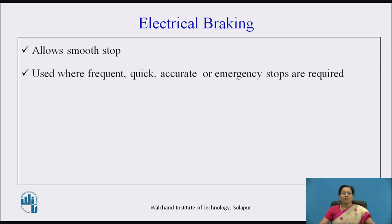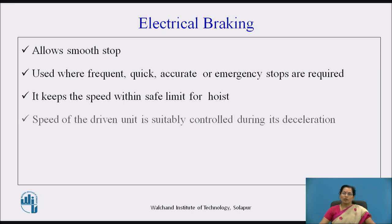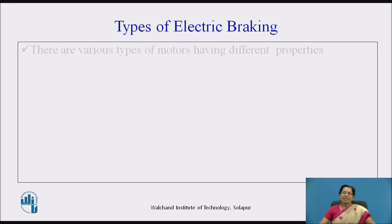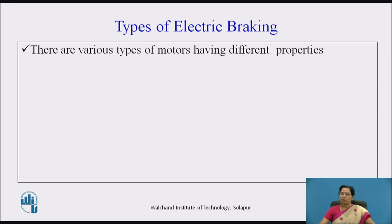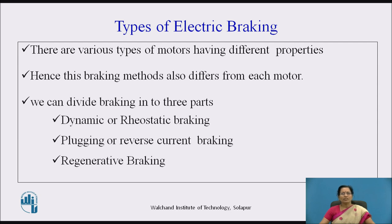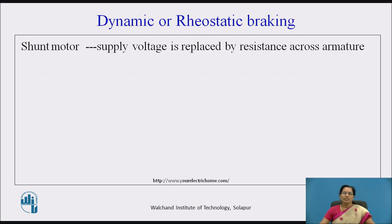Electrical braking is used where frequent, quick, accurate, and emergency stops are required. It keeps the speed within a safe limit for a hoist. Speed of the driven unit is suitably controlled during its deceleration. There are various types of motors having different properties, hence this braking method also differs for each motor. We can divide braking into 3 parts: dynamic or rheostatic braking, plugging or reverse current braking, and regenerative braking.